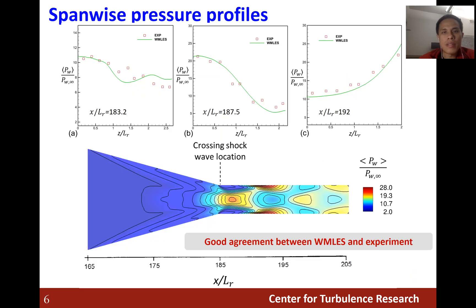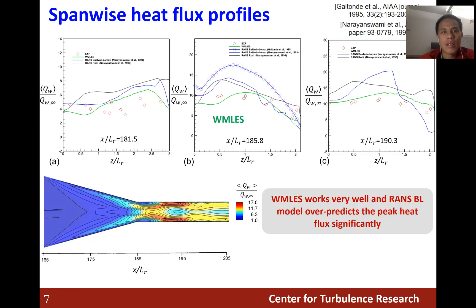We also examine the spanwise pressure profiles at different streamwise locations, and the wall-modeled LES prediction agrees with the experimental data quite well. A more critical statistic is the spanwise heat flux distributions. For all three different cases, the wall-modeled LES results agree with experimental data, while the RANS simulation with zero-equation Baldwin-Lomax and two-equation k-ω SST model overpredicts the peak heat flux by 100%.